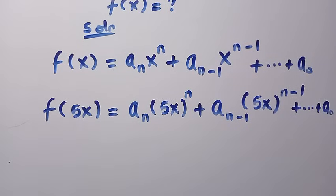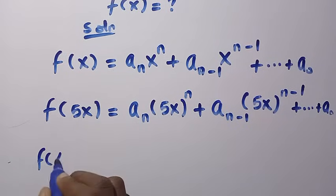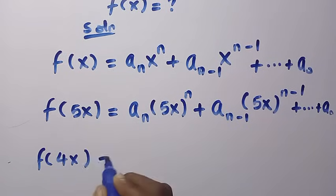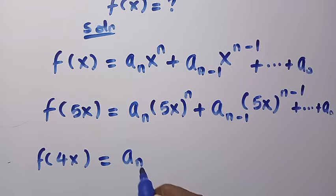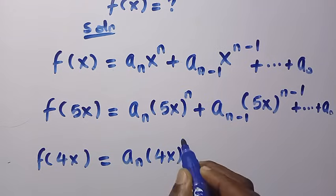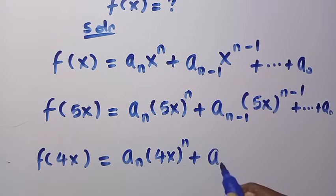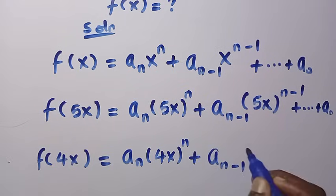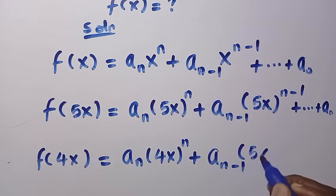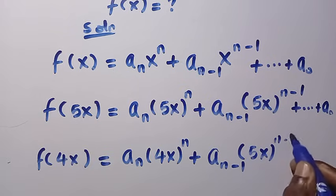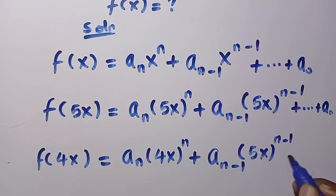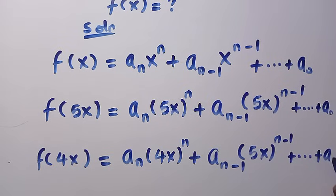Similarly, for f(4x) we insert 4x in place of x, giving: a_n (4x)^n plus a_{n-1} (4x)^{n-1}, and this also continues until we reach a_0.